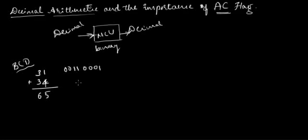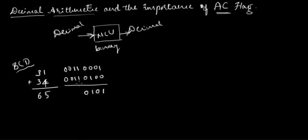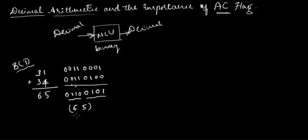The BCD equivalent of 31 is 0011 0001, and the BCD equivalent of 34 is 0011 0100. When I add these two numbers, I get 0100 0001, which is 65. Yes — when I feed two BCD numbers to the microcontroller I get the right result. But can I conclude so with just one example? Let me take one more.